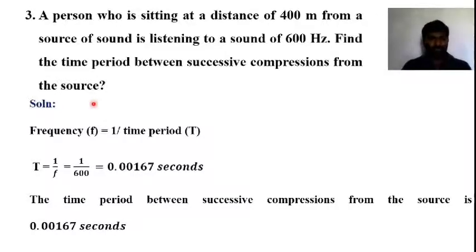Now we are going to solve this problem. Initially, we want to know what parameters are given in this question. Distance D equals 400 meters. Frequency F equals 600 Hertz. We need to find the time period. Frequency is inversely proportional to time period.